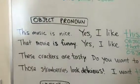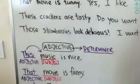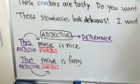So, sometimes it's an object pronoun. And finally, this, that, these, those can be an adjective, a determiner.